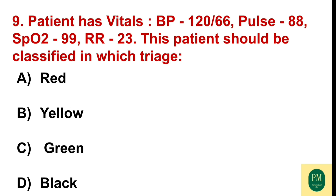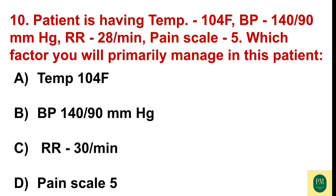A patient has vitals: BP 120/66, pulse 88, SpO2 99%, RR 23. The patient should be classified in which triage category? Option A: red. Option B: yellow. Option C: green. Option D: black. The correct option is Option C — green.